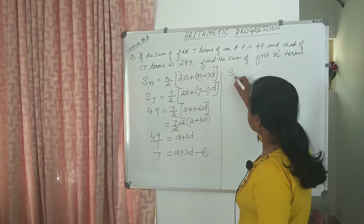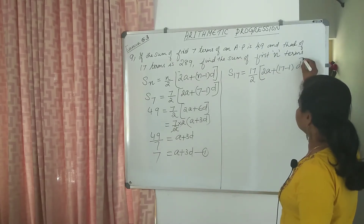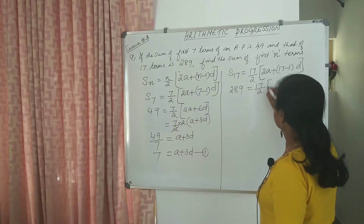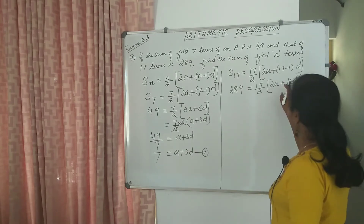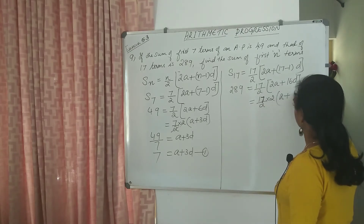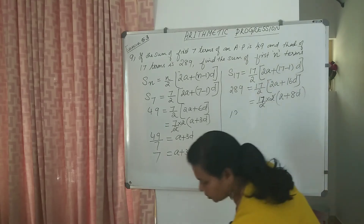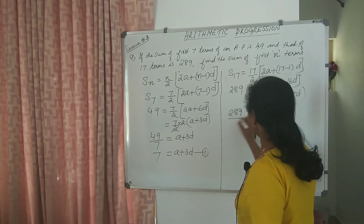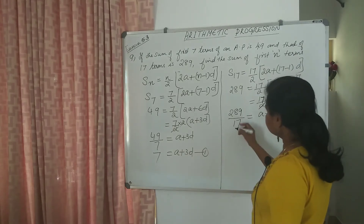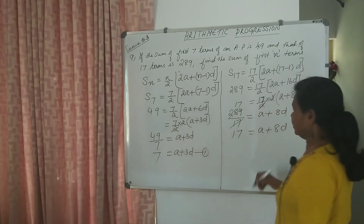This is the second clue: 17 terms. You can write S17 equal to 17 by 2 into 2A plus 17 minus 1 into D. S17 value is 289. So 289 equal to 17 by 2 into 2A plus 16D. Now we get 2 common. 17 by 2 into 2 common, so A plus 8D. Divide 289 by 17: equal to A plus 8D. 17 squared is 289. So 17 equal to A plus 8D. Equation number 2.